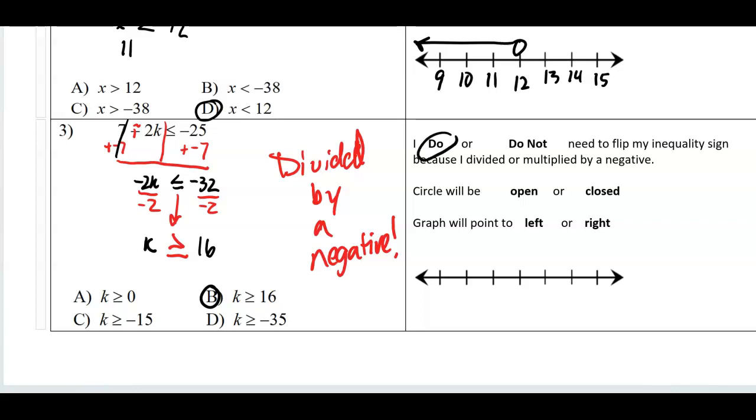My circle will be closed. Here's 16 with a closed circle. 17, 18, 19, 15, 14, 13. It will be a closed circle pointed to the right. Because the first number that makes this true is 17, which is greater than or equal to 16. We're going right.